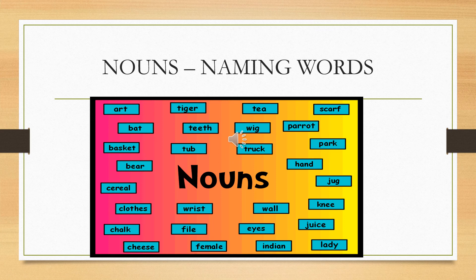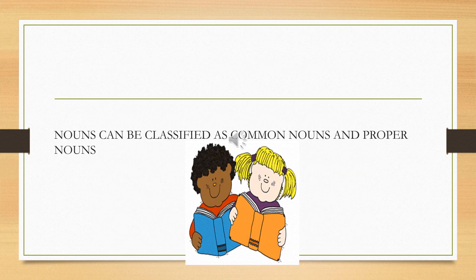For example, the words parrot, park, file, clothes, chalk, cheese — all these words are nouns. Nouns can be classified as common nouns and proper nouns. Let us learn about them.